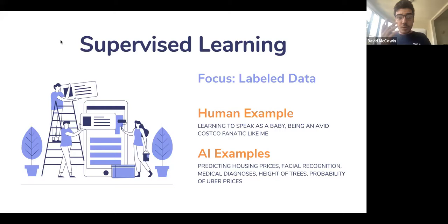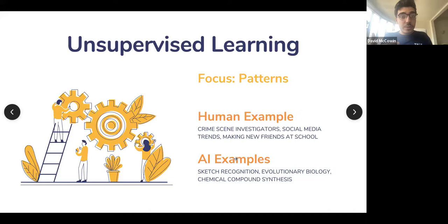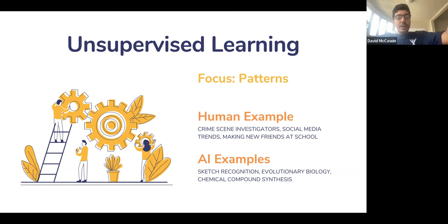Unsupervised learning — detecting patterns. Trying to discover chemical compounds is a great example, because this is where AI can find something we haven't found yet. An AI can find a new drug, a new medicine that humans have not discovered yet using unsupervised learning. As a human, you might do unsupervised learning when you're trying to solve a crime — you have a ton of information and need to find a solution no one has yet, or when determining if you like and trust someone.